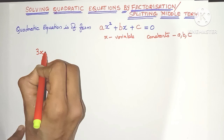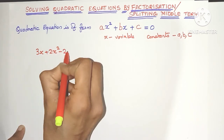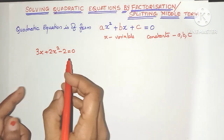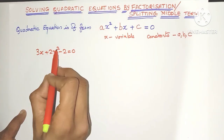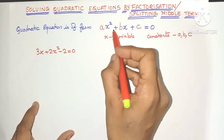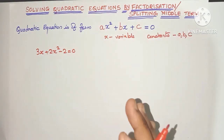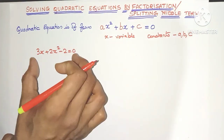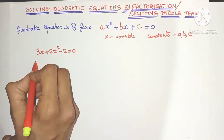For example, let us take this equation 3x plus 2x squared minus 2 equal to 0. As you can see, this is a quadratic equation because the degree is 2. But is it arranged in the same format? No. So the first step in solving quadratic equations is to arrange the equation in the standard form.